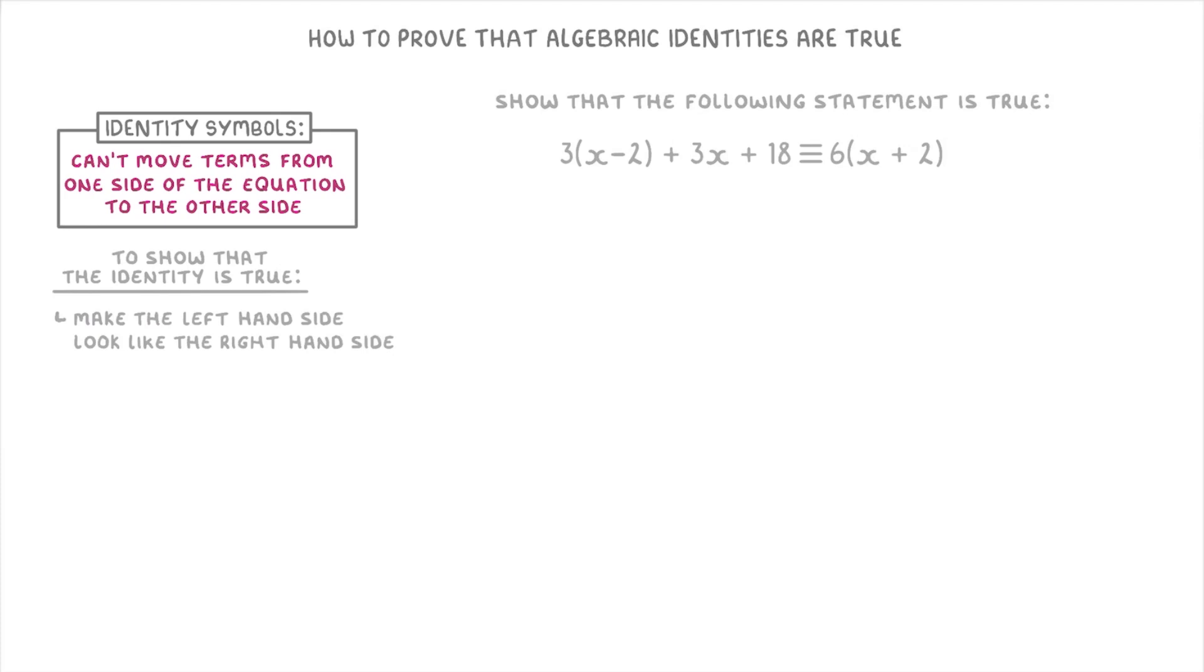So for our question, we'd first want to expand the 3 sets of x minus 2 to get 3x minus 6 plus the 3x and the 18. And then we can combine the like terms to simplify it all to 6x plus 12.